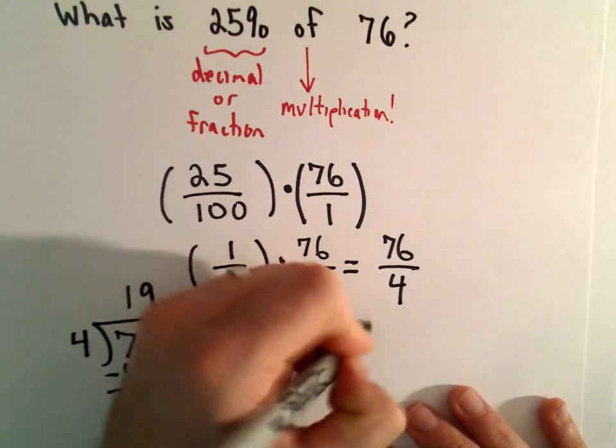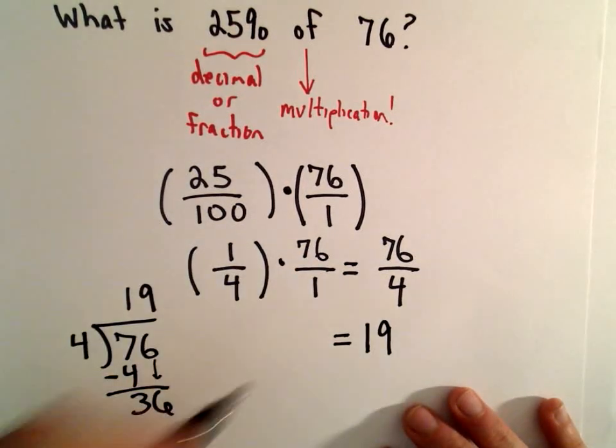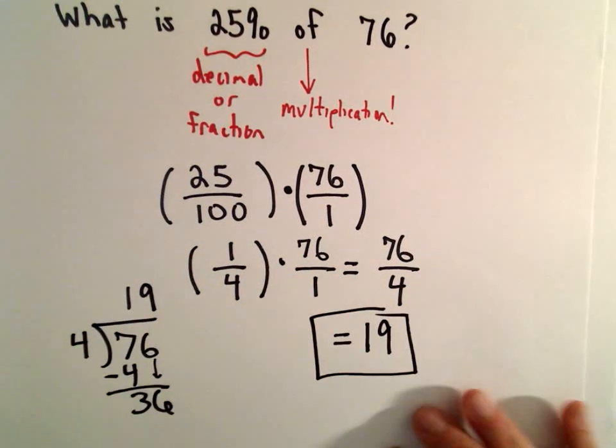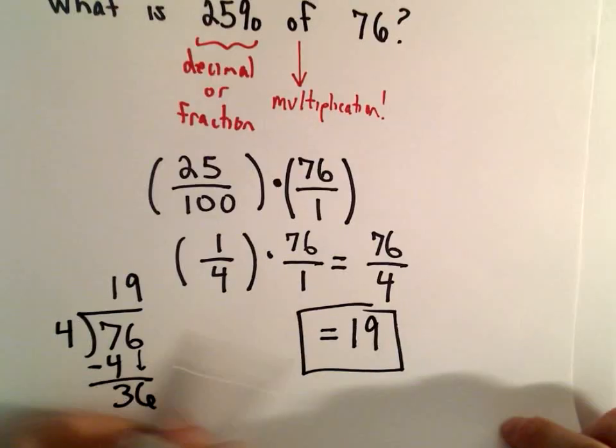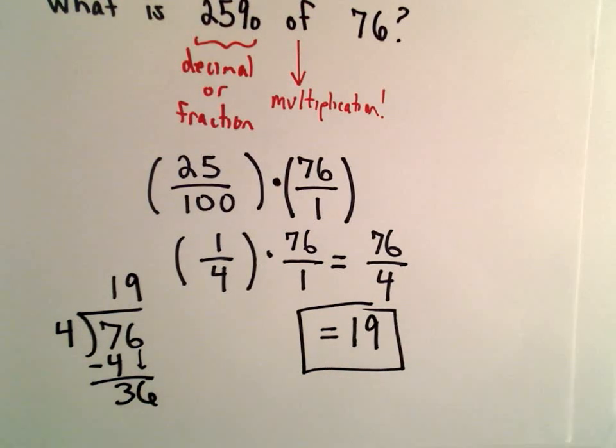So 76 divided by 4 is 19. So if you had 25% of, say, $76, you would have exactly $19.